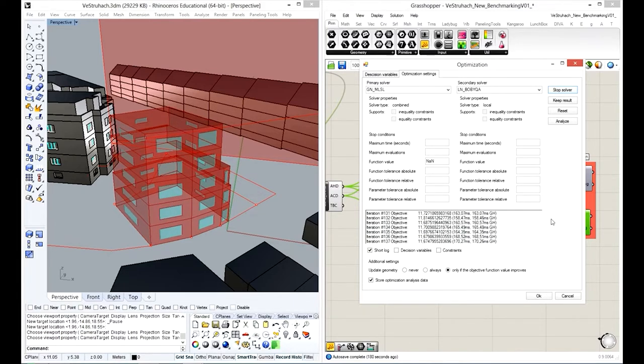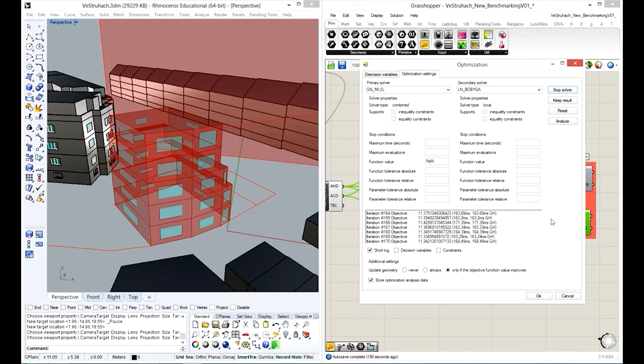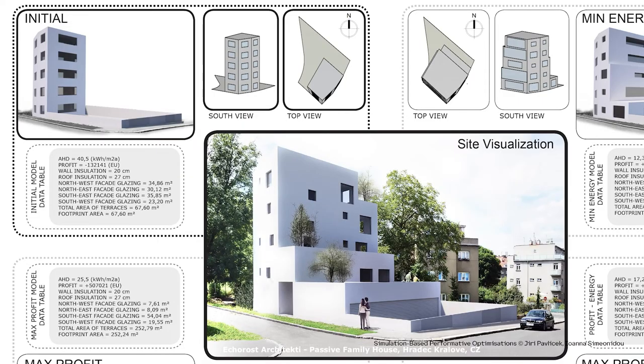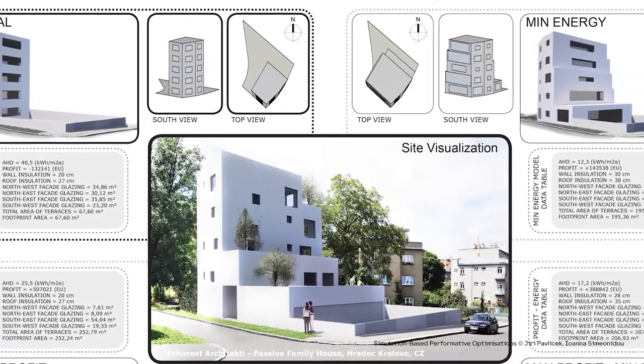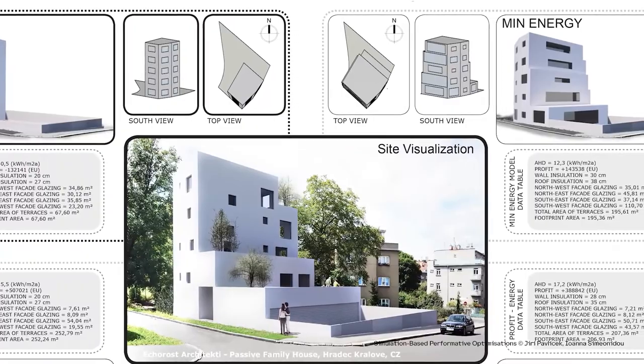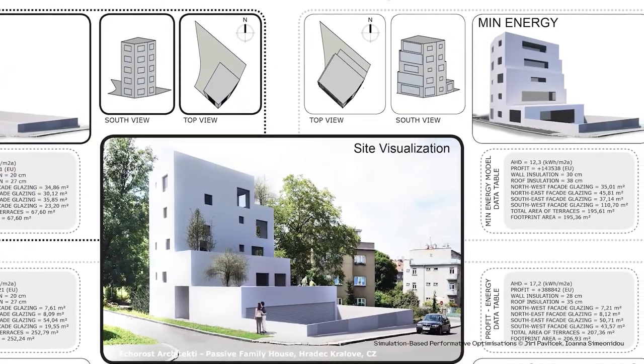In this case, what's called a multi-criteria optimization was performed, resulting in three alternative versions of the project. Here, only energy efficiency was taken into account, here only profitability, and here a combination of the two.